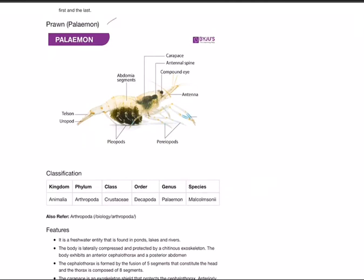Next animal: prawn, called Palaemon. Draw the diagram showing antenna, compound eye, antenna spine, carapace, abdominal segments, periopods, pleiopods, telson, and uropod. Label at least two or three parts. Classification: Kingdom Animalia, Phylum Arthropoda, Class Crustacea.